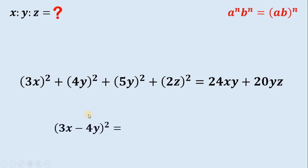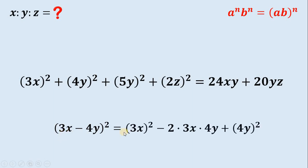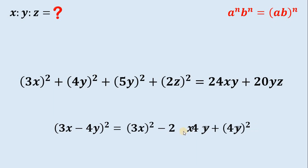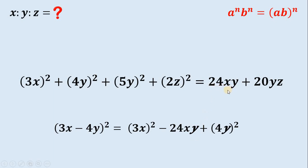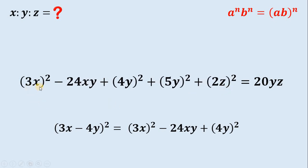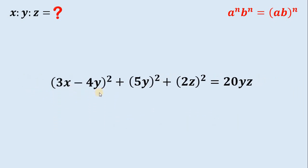What will happen if we square 3x minus 4y? If we expand this using binomial expansion, we get 3x quantity squared minus 2 times 3x times 4y plus 4y quantity squared. Multiplying negative 2 times 3x times 4y gives us negative 24xy — and that is exactly the term on the right-hand side. So what we're going to do is subtract 24xy on both sides. Then 3x quantity squared minus 24xy plus 4y squared is equivalent to 3x minus 4y quantity squared, and we can replace that expression accordingly.